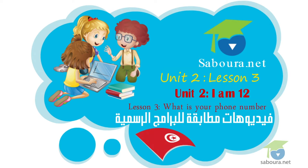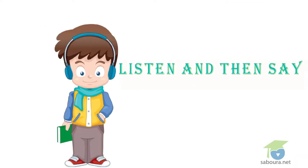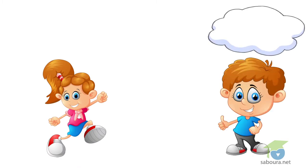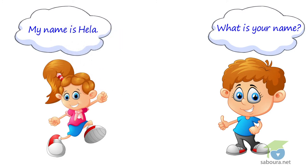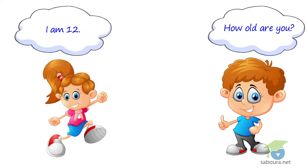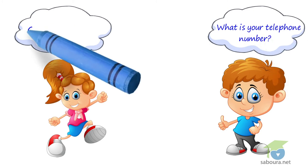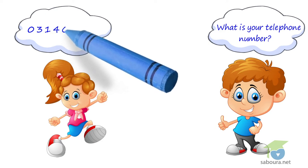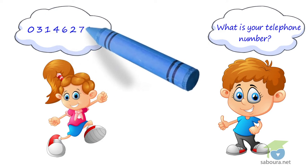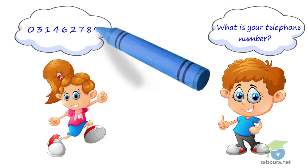What is your phone number? Listen and then say. What is your name? My name is Hela. How old are you? I am 12. What is your telephone number? 0-3-1-4-6-2-7-8-9.